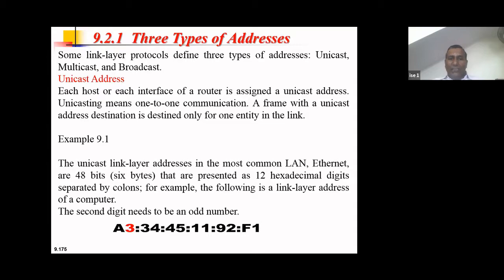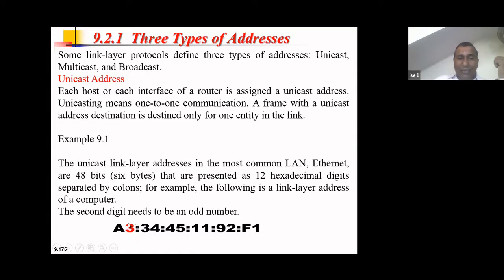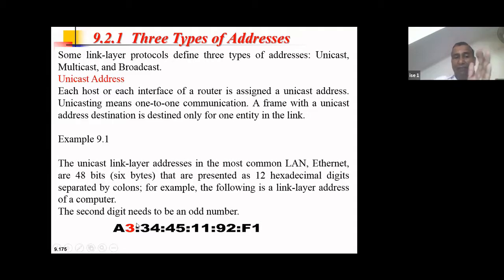How do we identify a unicast address? The second hexadecimal digit from the left must always be an odd number. You can see the digit colored in red is an odd number. When a receiving host or router sees an odd value in the second position from the left, it understands the frame is a unicast address meant for it.